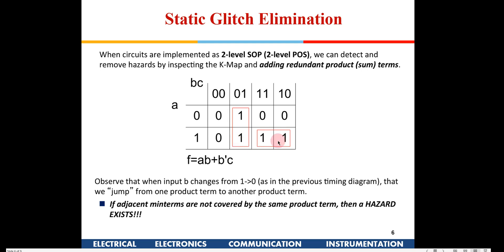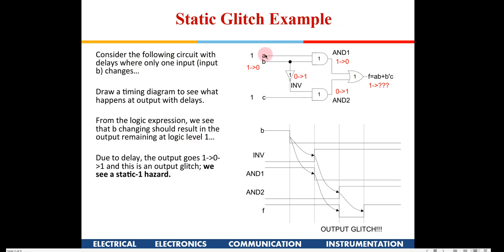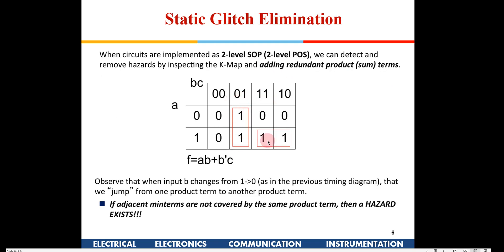Now let's make a K-map for this function: AB + B'C. Looking at the K-map, if you group the cells in the minimum way — this gives the minimum expression, which is what we learned. This is the best possible grouping if we are not bothered about a glitch, and is fine for low-frequency applications.